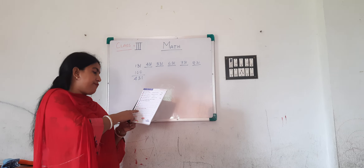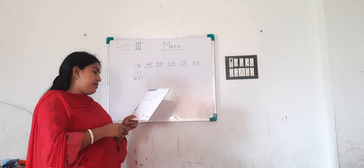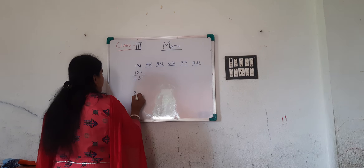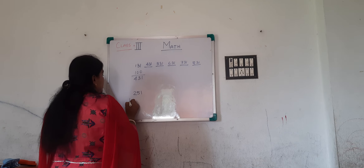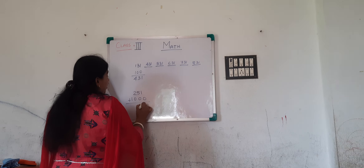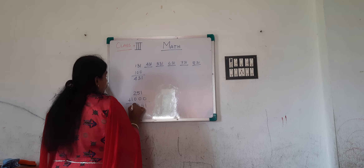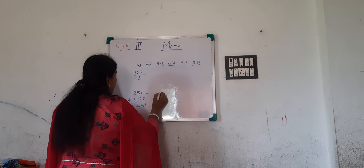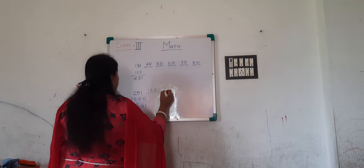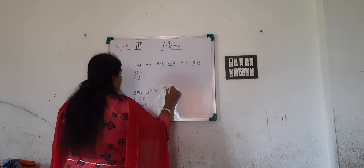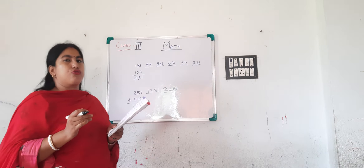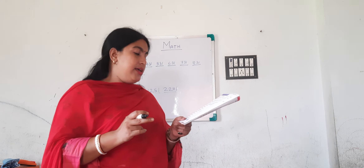In the next question, you have to do skip counting by 1000. The first number given is 251. Just add 1000 to the given number. So your next number is 1,251. Next is 2,251. In this way, you have to skip counting by 1000.